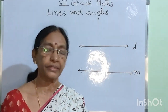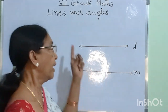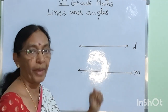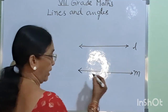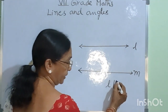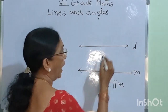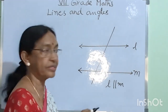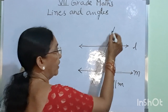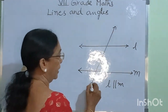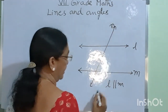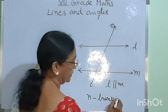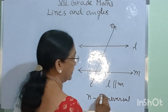Welcome to my 7th class mathematics, Lines and Angles. L and M are two parallel lines, that is written as L is parallel to M, and a line intersects the two lines which is called a transversal N. N is called a transversal.